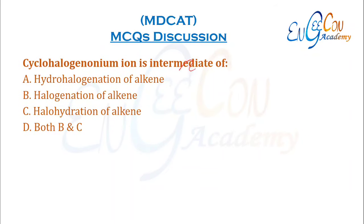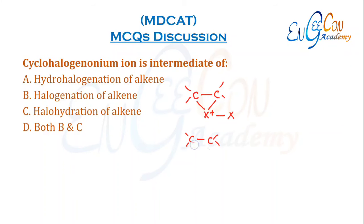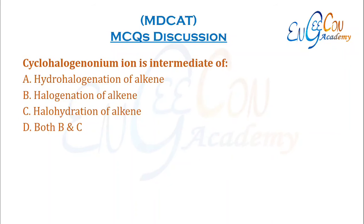Cyclohalogenonium ion is an intermediate of which reactions? This cyclohalogenonium ion is formed when an alkene is attacked by a halogen molecule. It is formed in two reactions: halogenation of alkenes, and halohydration of alkenes (because in halohydration, the first attacking molecule is also X2). So both halogenation and halohydration — options B and C — are correct.